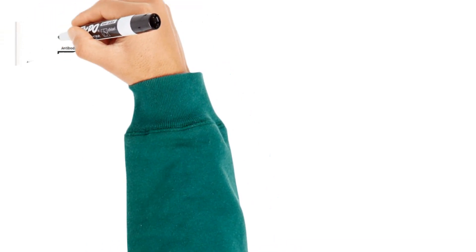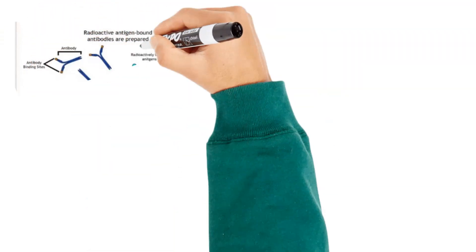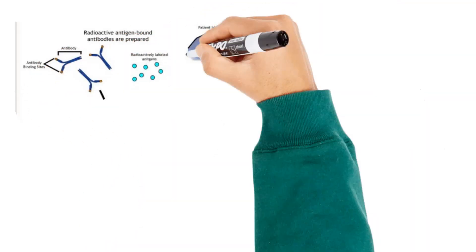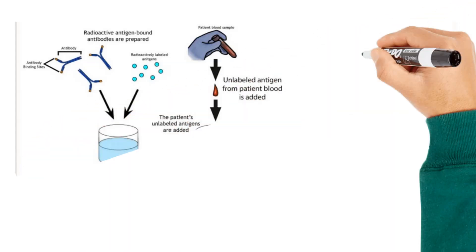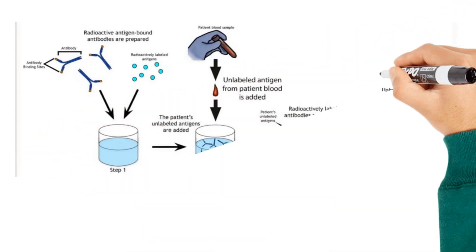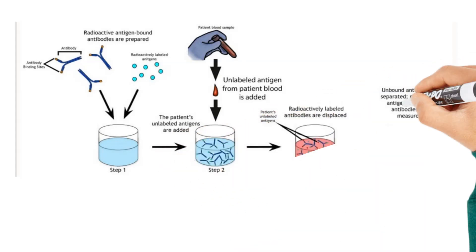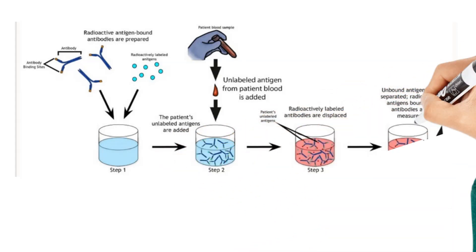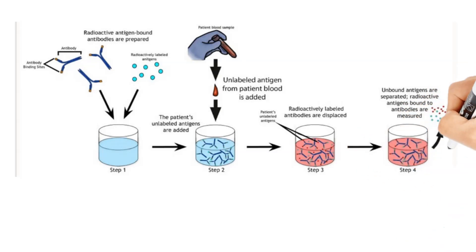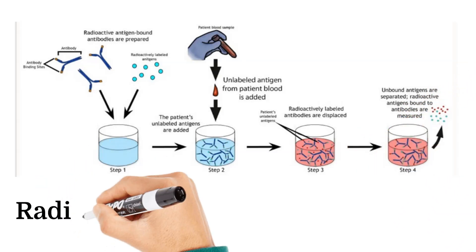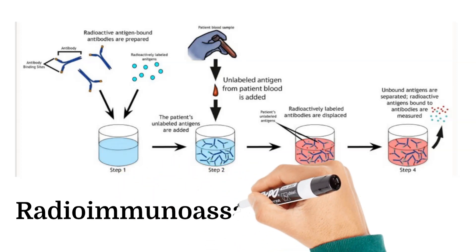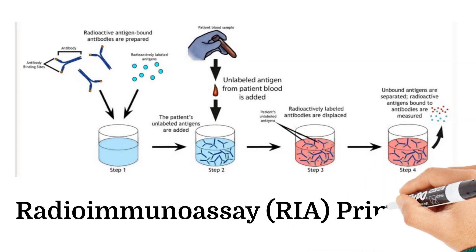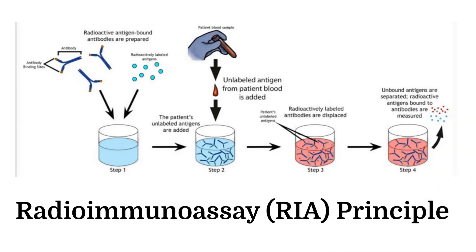Radioimmunoassay involves radioactive labeled antigens bound to specific antibodies in the reagent. When unlabeled insulin from the sample is added, it competes with the radioactive labeled antigens to bind to anti-insulin antibodies and displaces the bound labeled antigens. The decreased radioactivity of the antigen-antibody complex is measured and is therefore inversely proportional to the amount of insulin present in the sample.